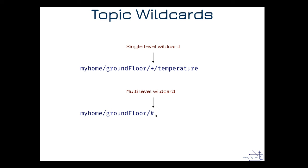The multi-level wildcard, the hash symbol, means the message goes to everybody on the ground floor — anybody subscribed to temperature, humidity, or any other topic at that level. Those are the two key wildcards. We won't use them in what we're doing, but they're good to know.